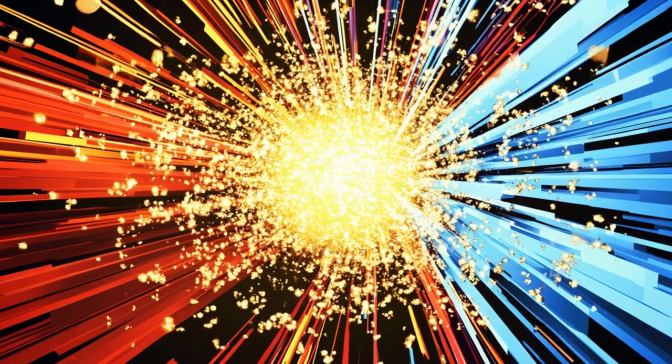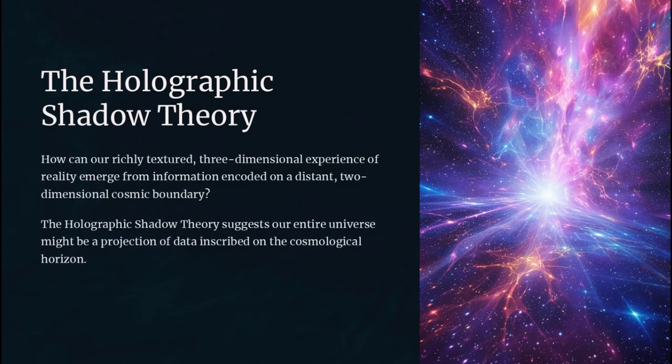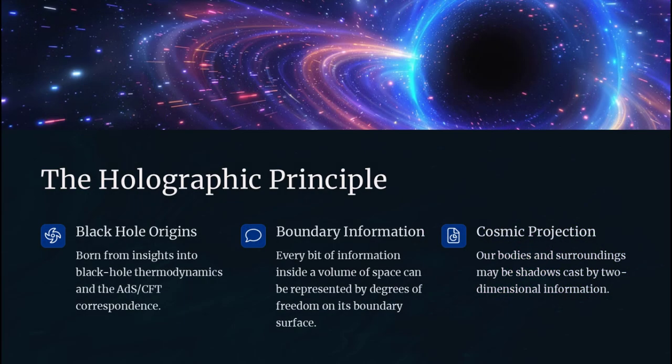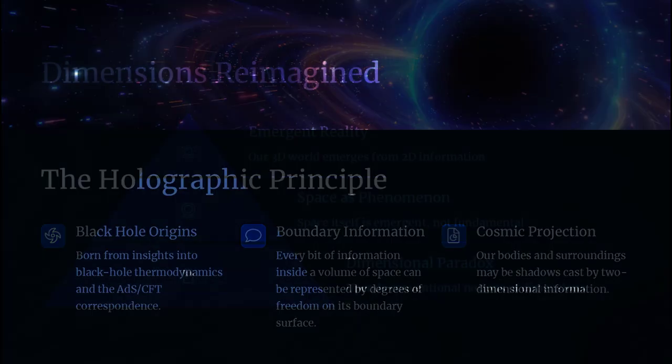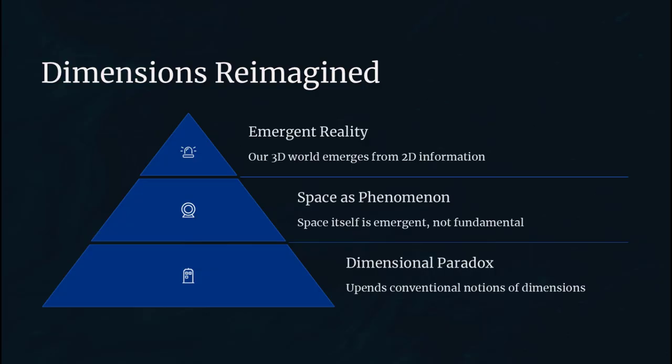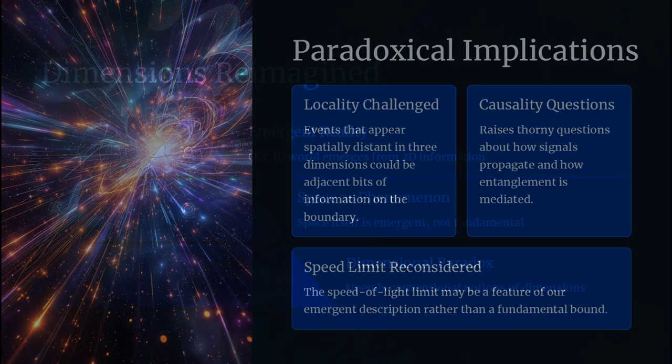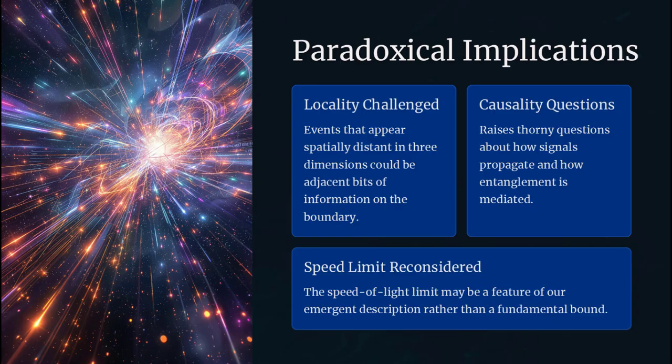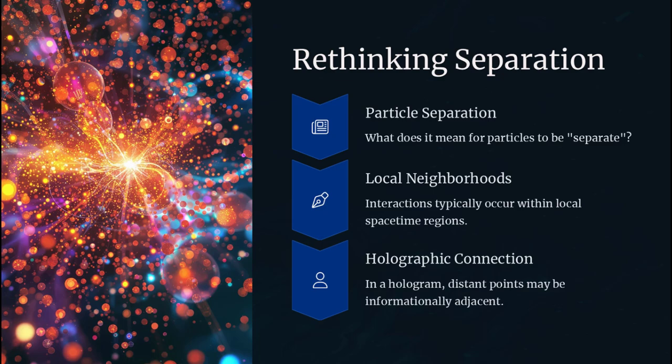How can our richly textured three-dimensional experience of reality emerge from information encoded on a distant two-dimensional cosmic boundary? According to the holographic principle, born from insights into black hole thermodynamics and the AdS/CFT correspondence, every bit of information inside a volume of space can be represented by degrees of freedom on its boundary surface.